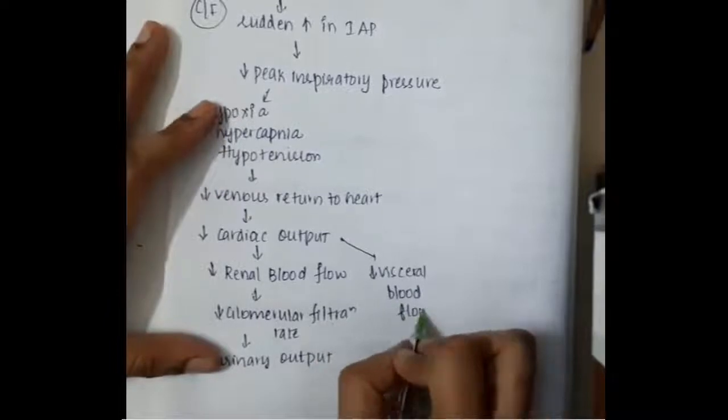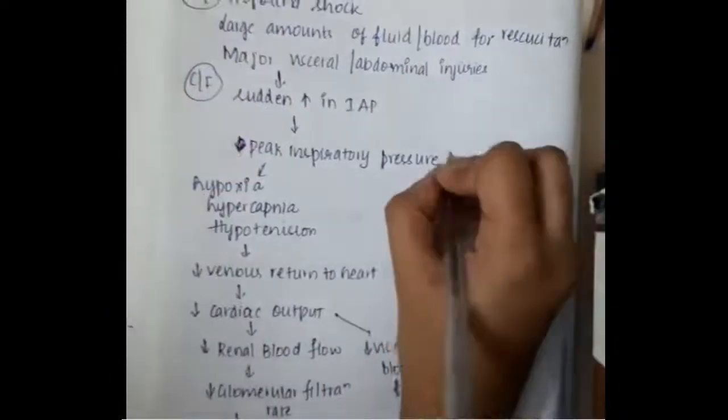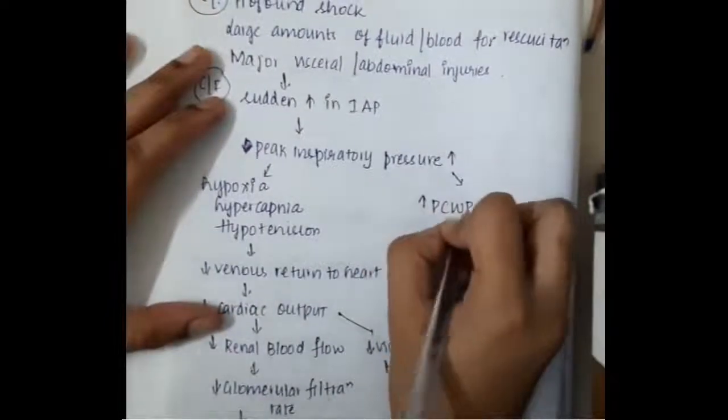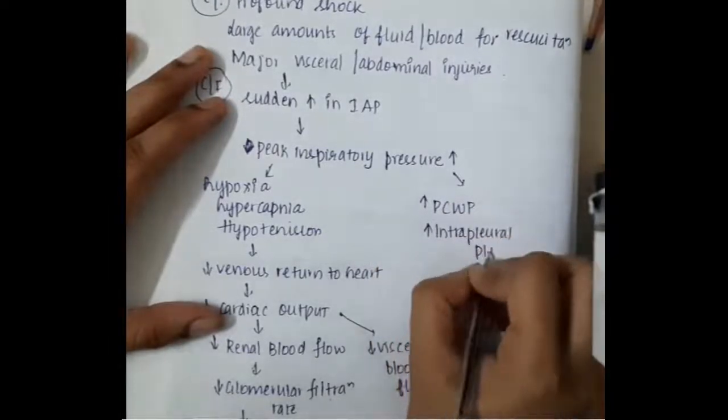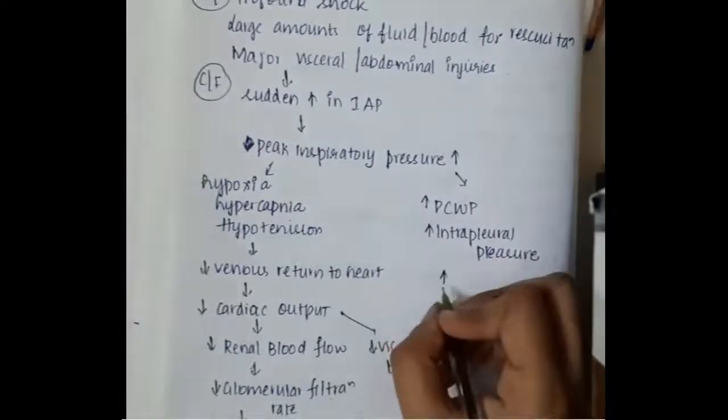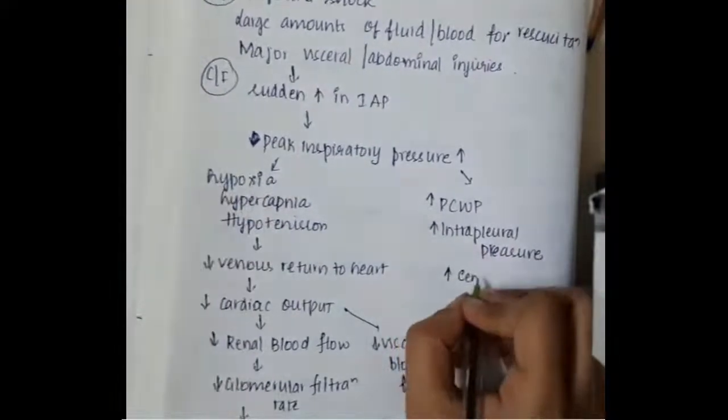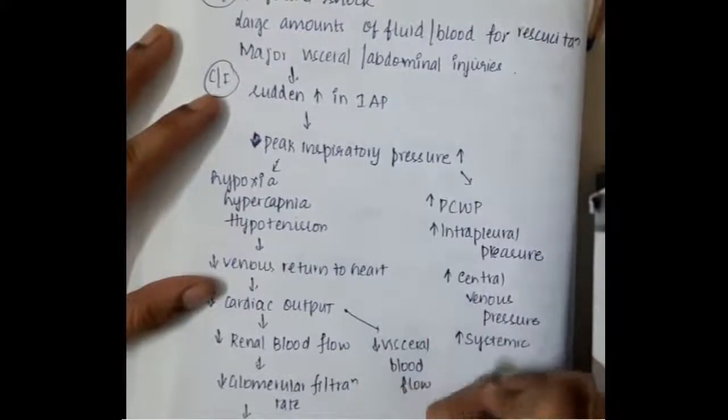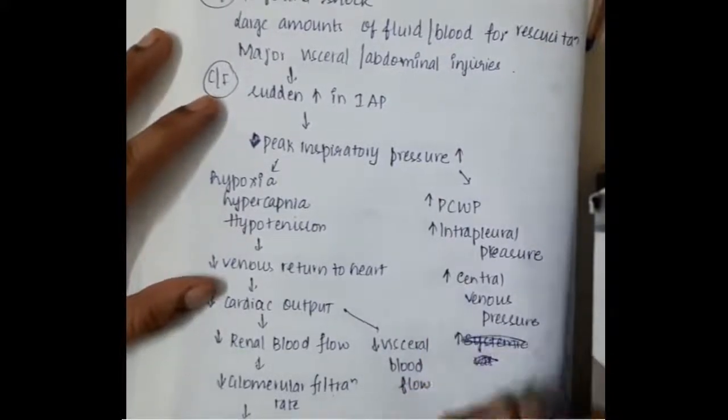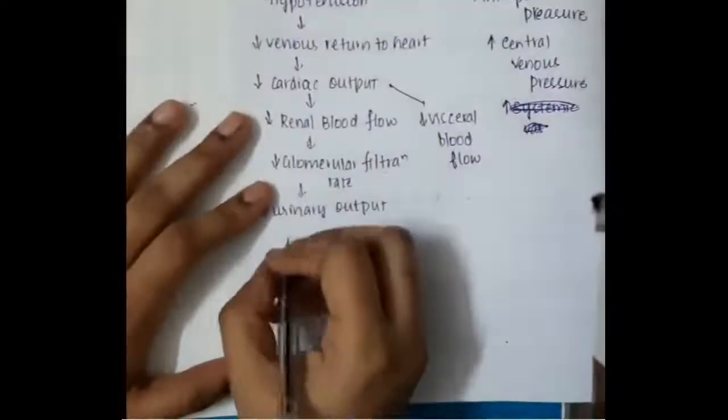Decreased cardiac output causes decreased visceral blood flow. This peak increase in inspiratory pressure also increases the pulmonary capillary wedge pressure, increases the intrapleural pressure and also central venous pressure. These are the different clinical features, the differences in pressures which you see.